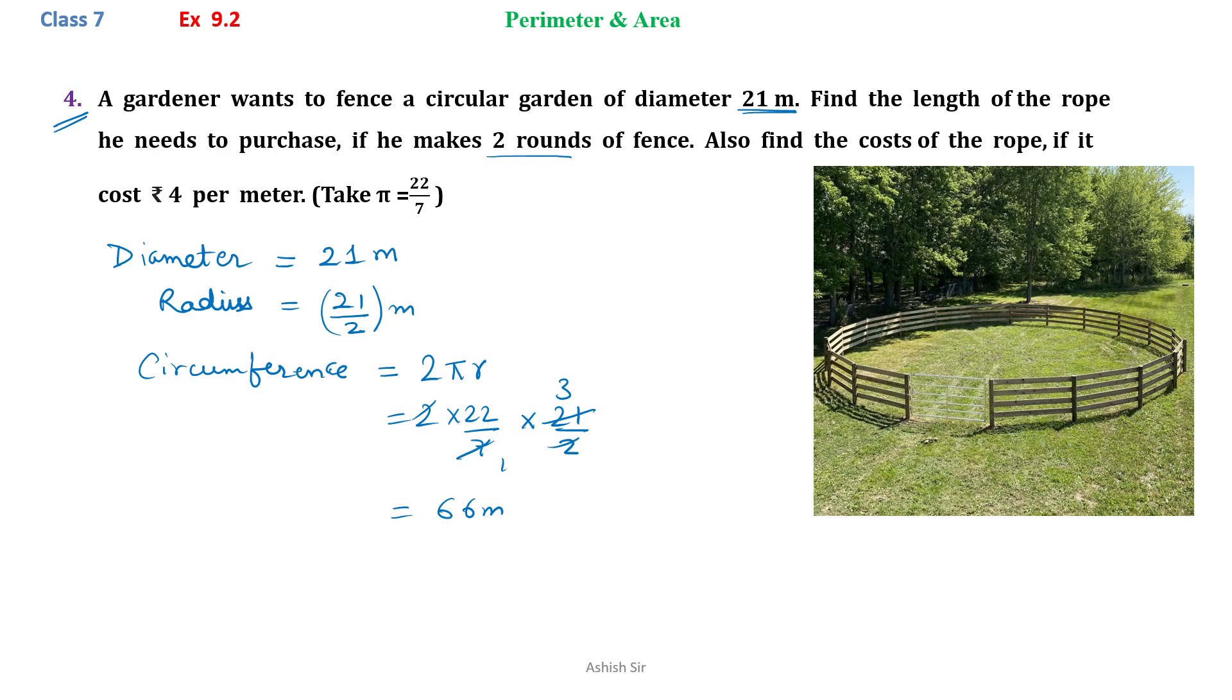Now the fence is made by 2 rounds. So total length, we can find total length of fence is equals to 2 × 66, that is 132 meters.